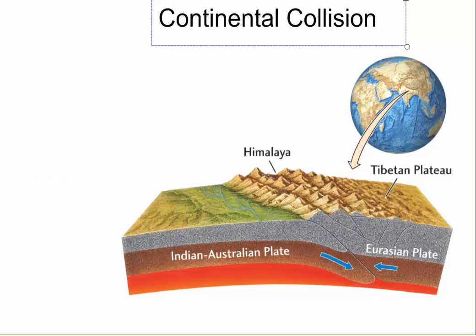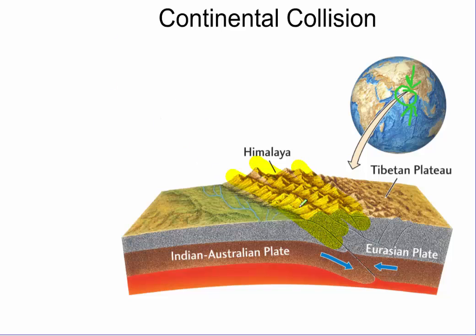The first type is continental collision — two continental plates coming together. We see this happening as the subcontinent of India is colliding with Asia, and we form the Himalayan mountains. You can see these folded mountains that kind of push together.